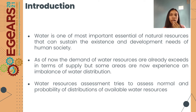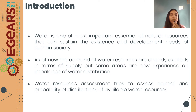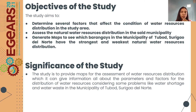Water is one of the most important essential natural resources that can sustain the existence and development needs of human society. In contrast, the demand for water sources already exceeds supply in some areas, which are now experiencing imbalance of water distribution. Water resources assessment tries to assess the normal probability of distribution of available water sources. The aim of the study is to first determine the several factors that affect the condition of natural water sources distribution in the said area.